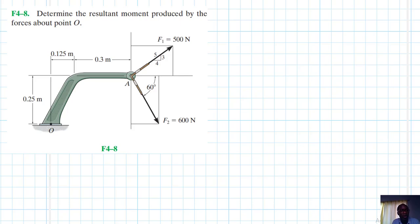Hello, I welcome you. The problem reads: determine the resultant moment produced by the forces about point O. Let's divide these particular forces into their various components. For F1, we'll have one component in this direction like so, and another in this direction like so.